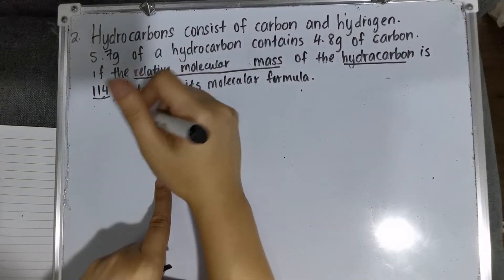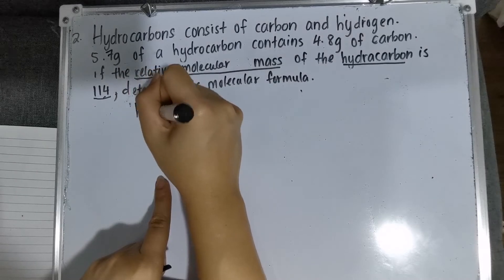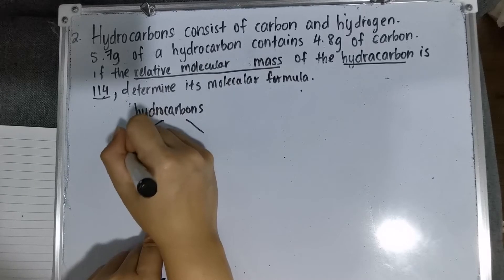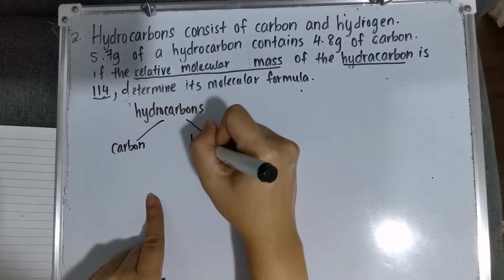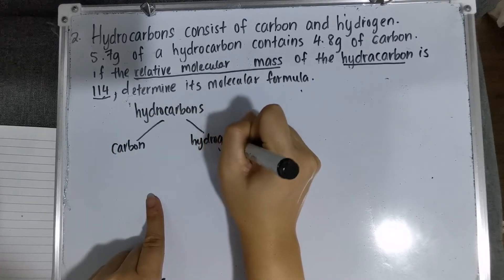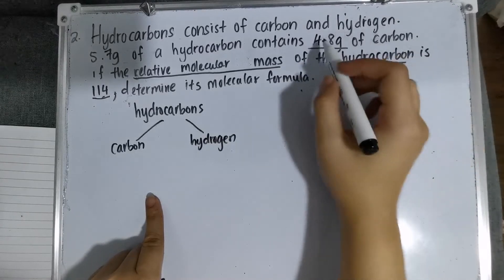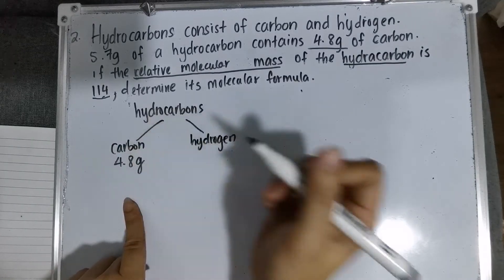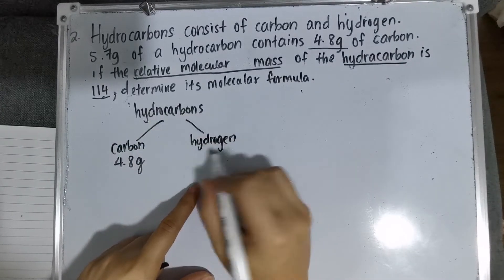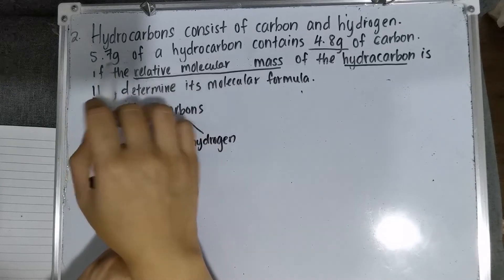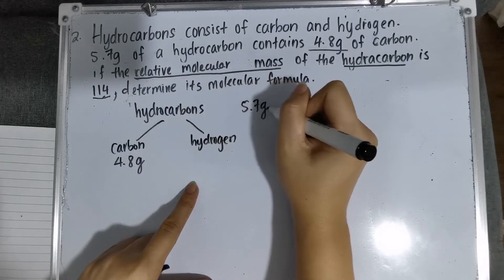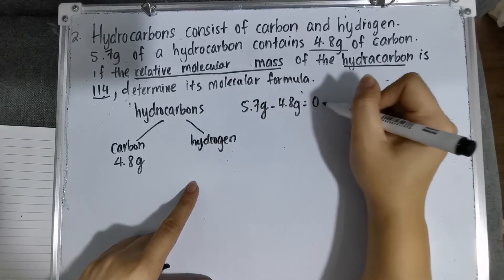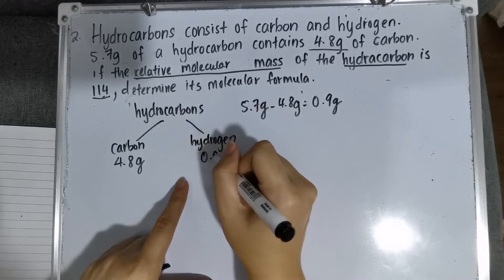So before we do this, you must sort out that hydrocarbons consist of carbon and hydrogen. It mentions that the carbon is 4.8 grams. What about your hydrogen? The total mass of hydrocarbon is 5.7 grams, so you have to minus 4.8, which equals 0.9 grams. So your hydrogen is 0.9 grams.